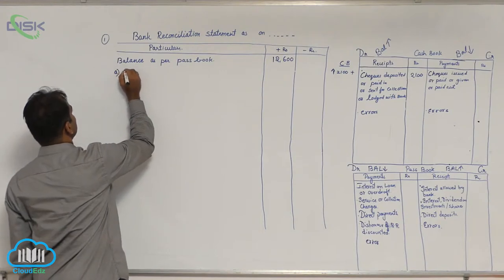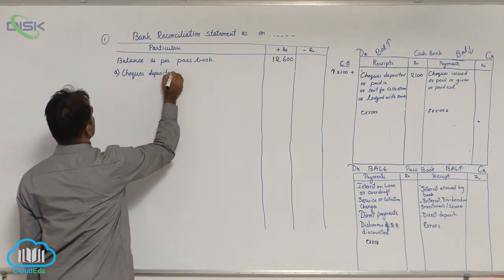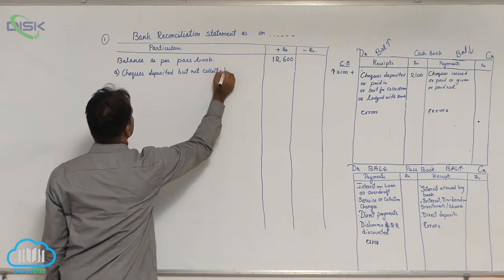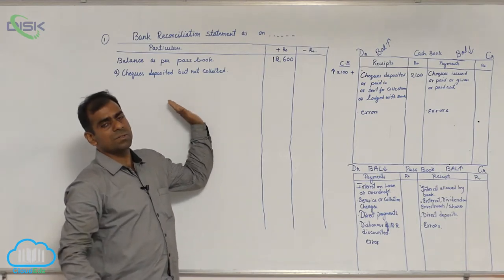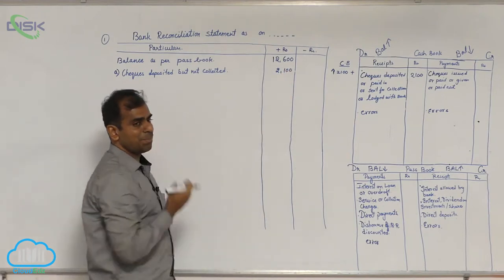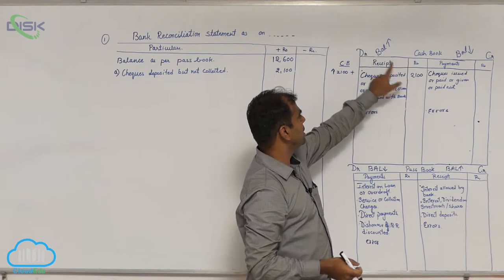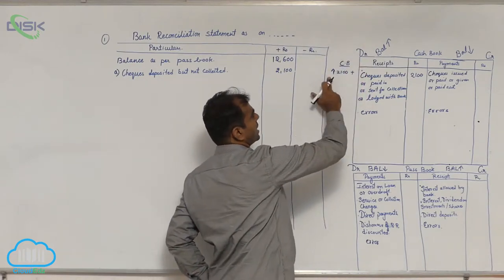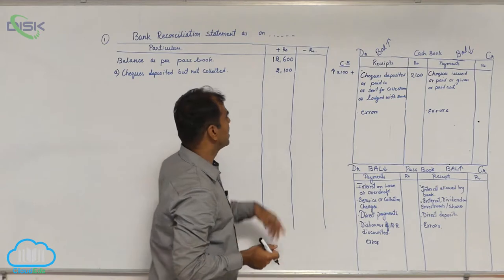Write the particulars as 'Checks deposited but not collected' and enter 2100 in the plus column. The reason for adding: the entry is on the debit side of the cash book, which increases the balance. Since your target is the cash book balance and it is increasing, you place this amount in the plus column of your BRS format.